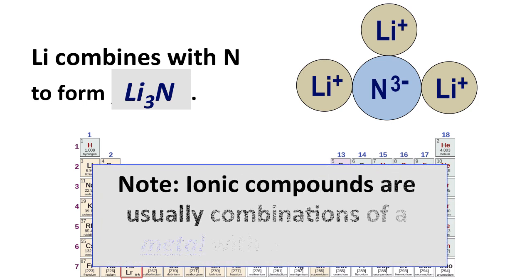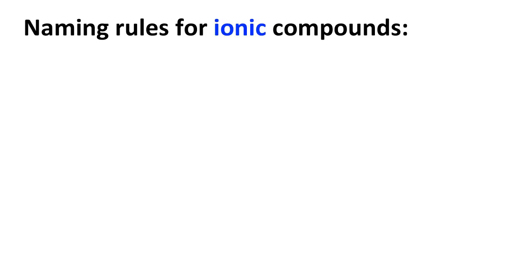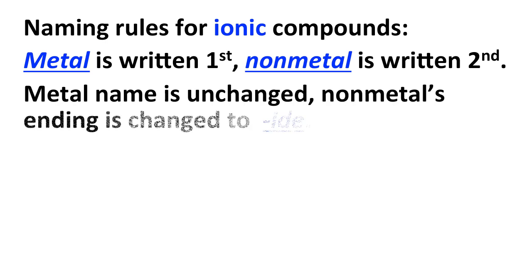As a general rule, ionic compounds are usually made by a metal reacting with a nonmetal. Note that we write the metal symbol first to the left, followed by the nonmetal symbol to the right. How do we name ionic compounds? We write the metal first. The nonmetal is written second. The metal's name is unchanged, but the nonmetal's name is changed to an ending of -ide.